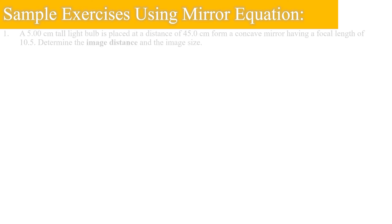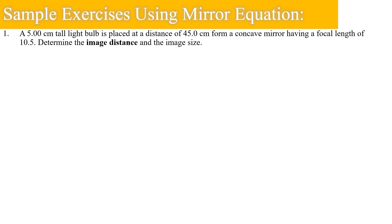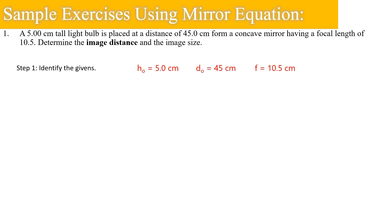Let's have a sample exercise using the mirror equation. A 5 cm tall light bulb is placed at a distance of 45 cm from a concave mirror having a focal length of 10.5 cm. Determine the image distance and the image size. Step 1: Identify the givens — height of object HO = 5 cm, object distance DO = 45 cm, focal length F = 10.5 cm.